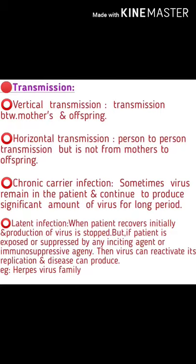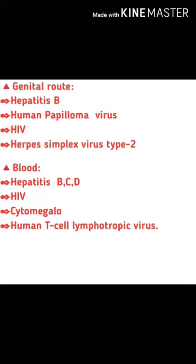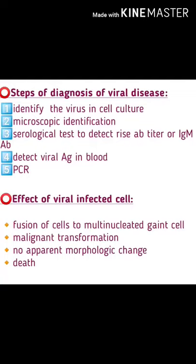Routes of entry of viral pathogens: Respiratory — Influenza virus, Respiratory Syncytial Virus, Rhinovirus, Epstein-Barr virus, Cytomegalovirus, Mumps virus. Gastrointestinal — Hepatitis A and E, Poliovirus, Rotavirus. Skin — Rabies virus, Dengue, Yellow fever. Genital — Hepatitis B, Human Papillomavirus, HIV, Herpes Simplex Virus type 2. Blood — Hepatitis B, C, and D, HIV, Cytomegalovirus, Human T-cell Lymphotropic Virus. Perinatal infections — transplacental: Cytomegalovirus, Rubella virus; at birth: Hepatitis B and C, HPV, HIV; through breastfeeding: Cytomegalovirus, Human T-cell Lymphotropic Virus.